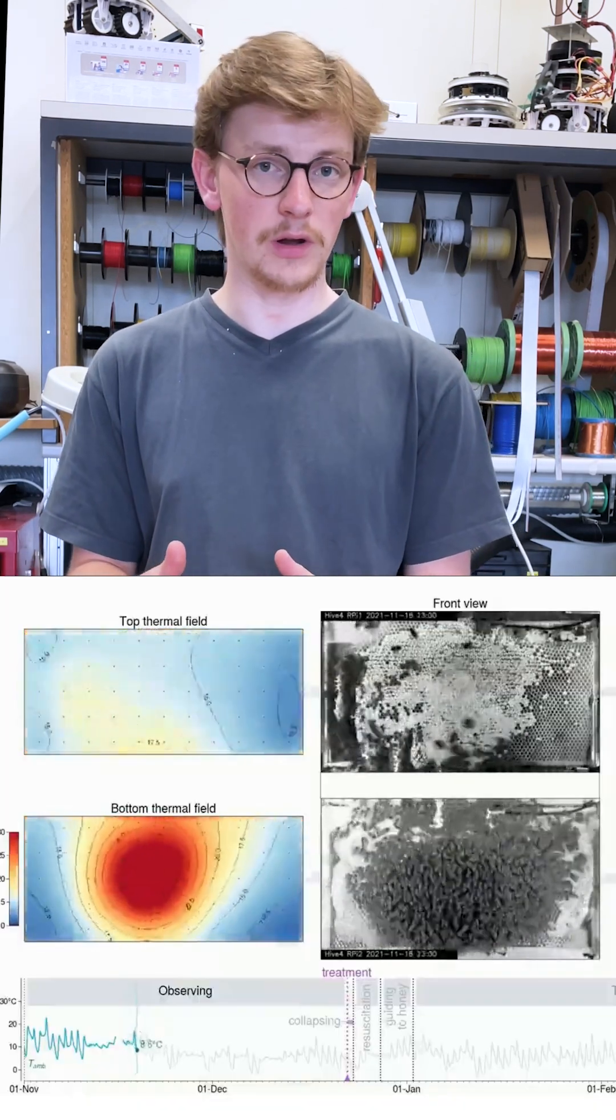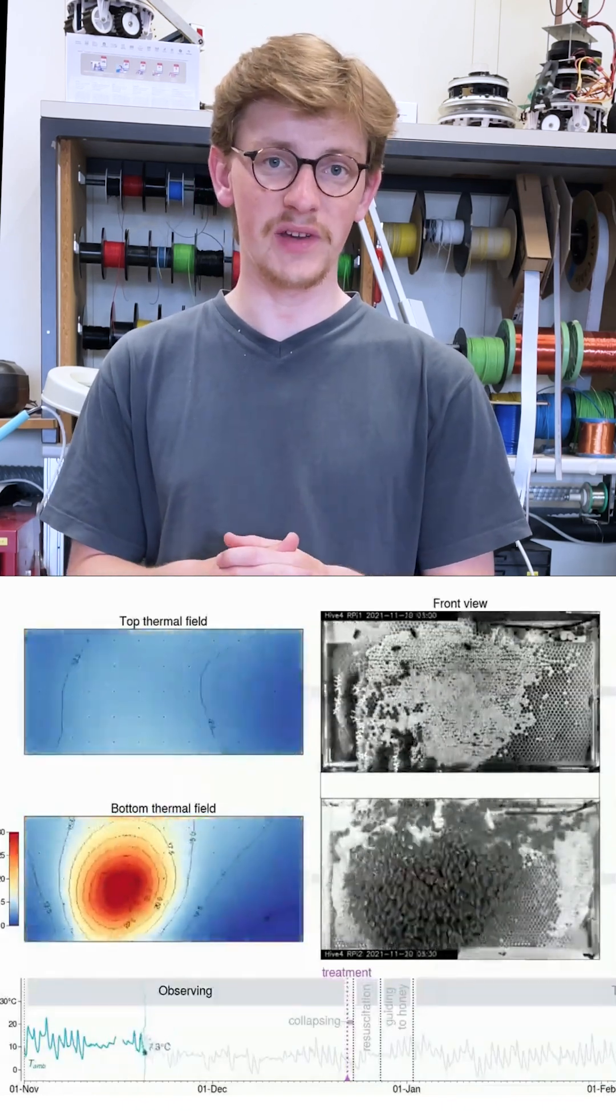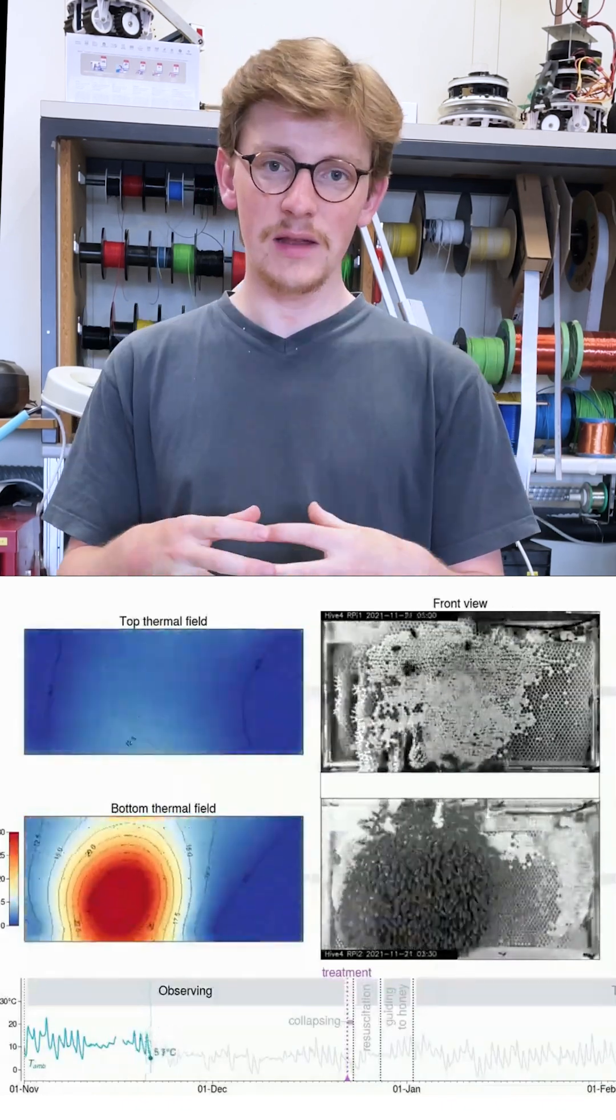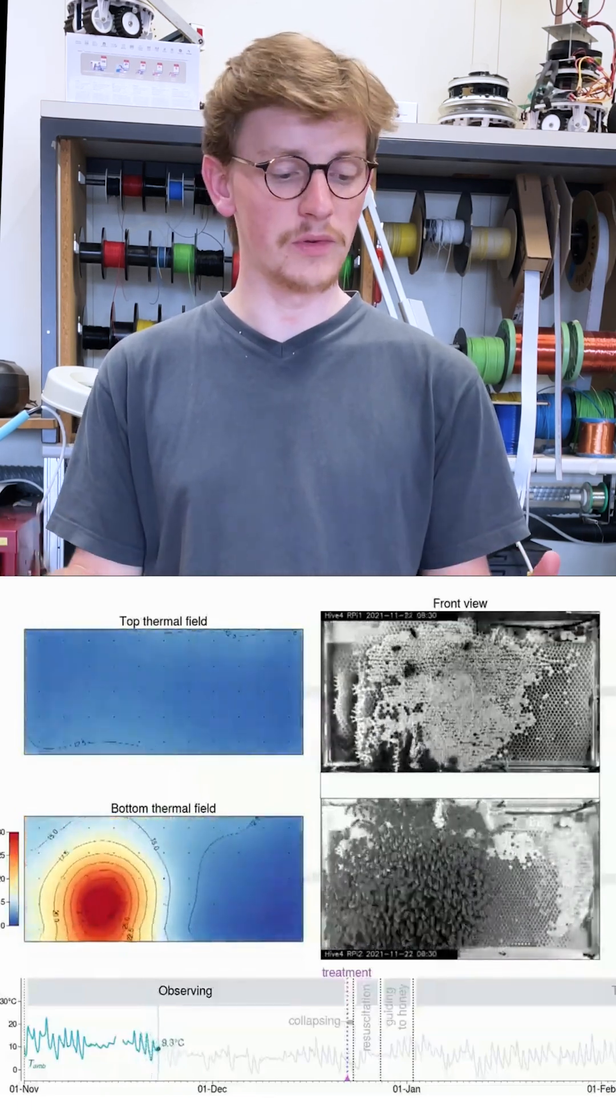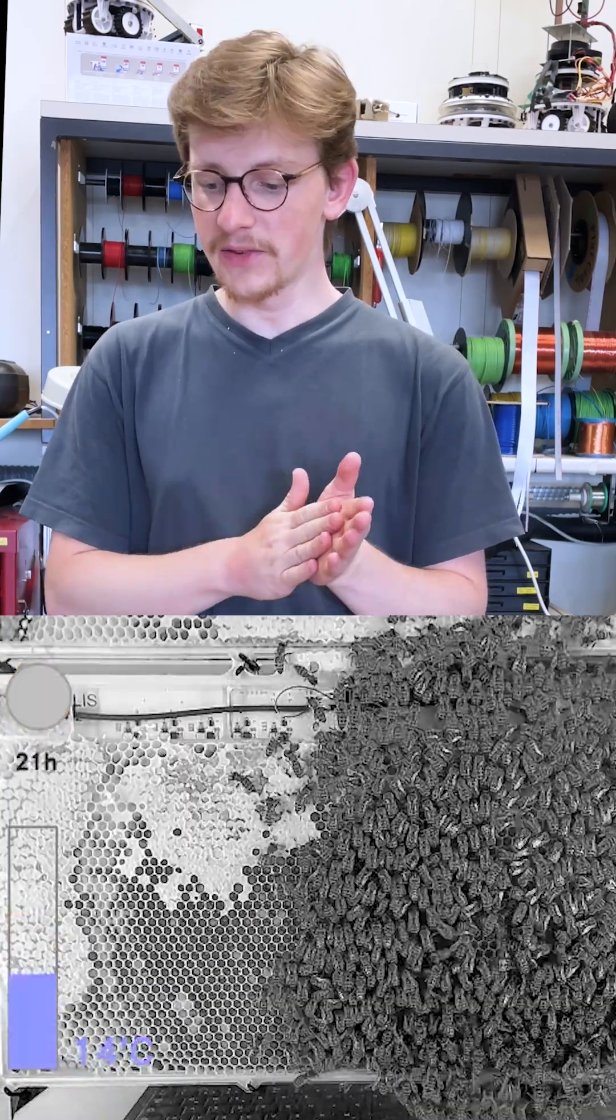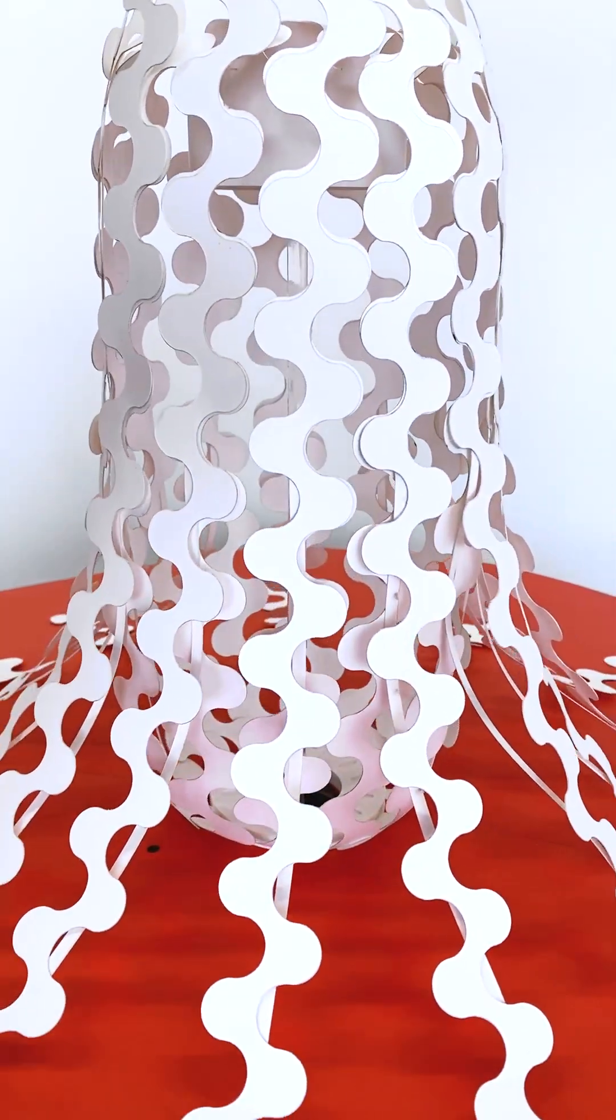Winter bees group together to form this tight pack called a winter cluster, but then they break cluster during the day to feed on the surrounding honey patches and then group back together during the colder night times. This is something that we've been trying to represent with this organic motion and structure.